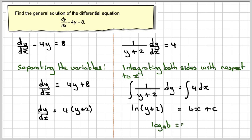Right, we now use the idea that log a to the b is equal to c implies a to the c is equal to b. So what we're going to say is that y plus 2 will be e to the 4x plus c.